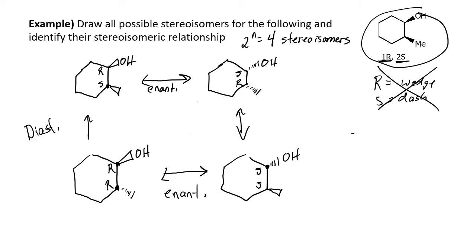What is the relationship between the top and bottom compounds? These are diastereomers. To get from the bottom to the top, I held one stereocenter — carbon one with the OH group — the same, and flipped the methyl from a wedge to a dash.